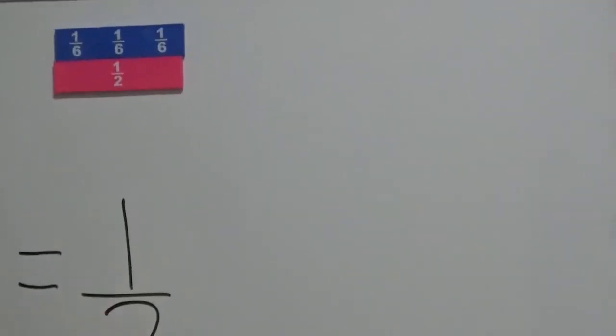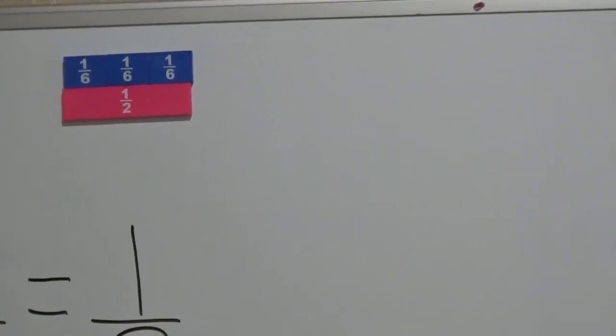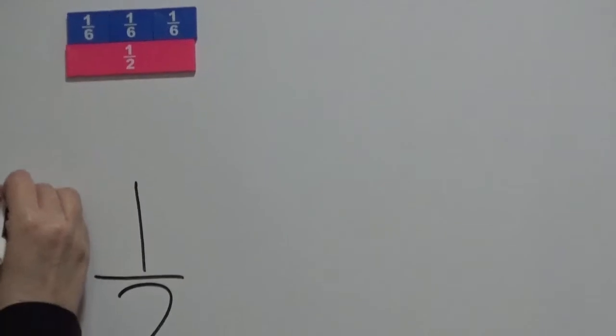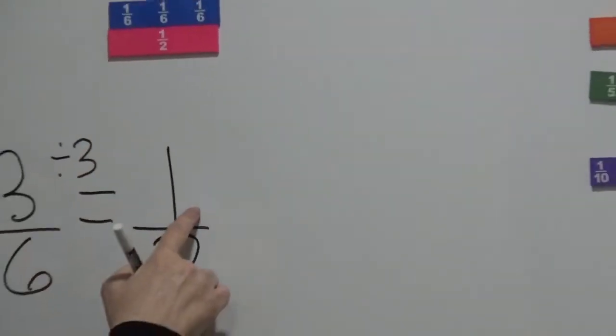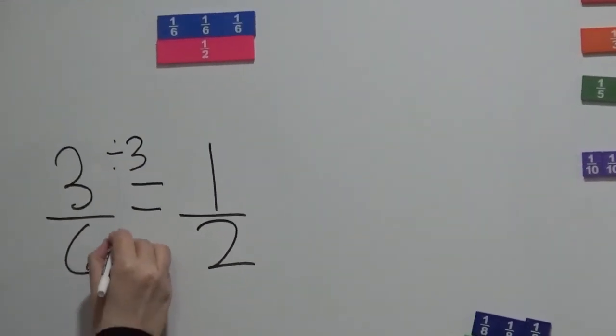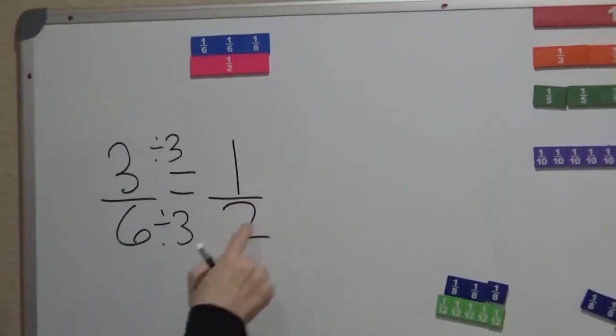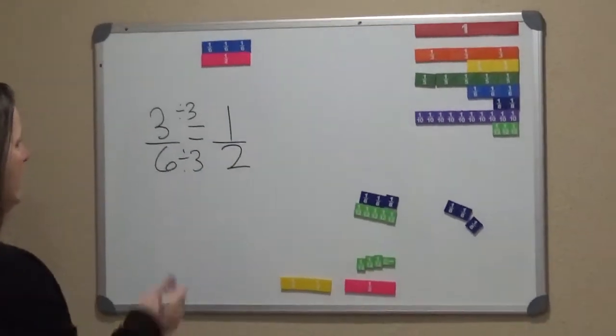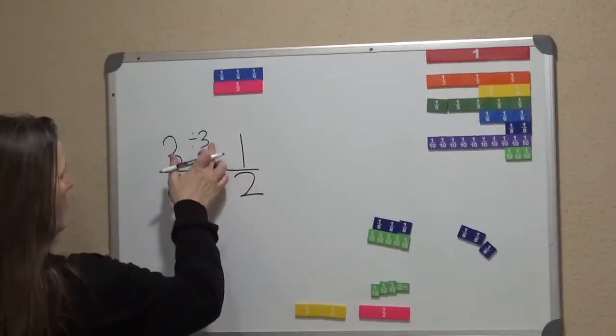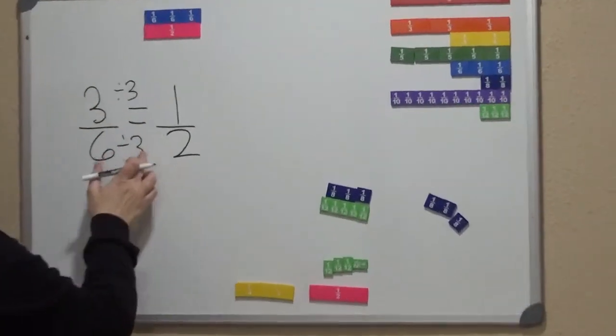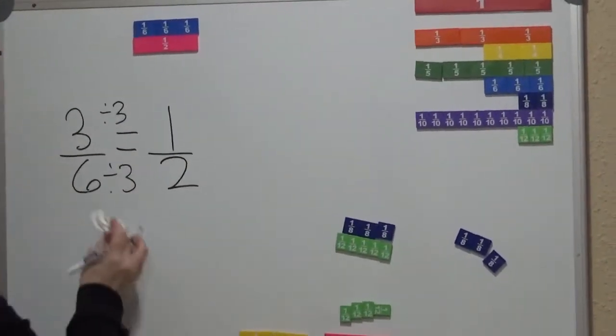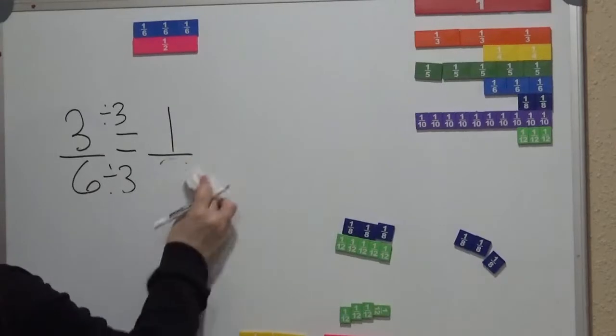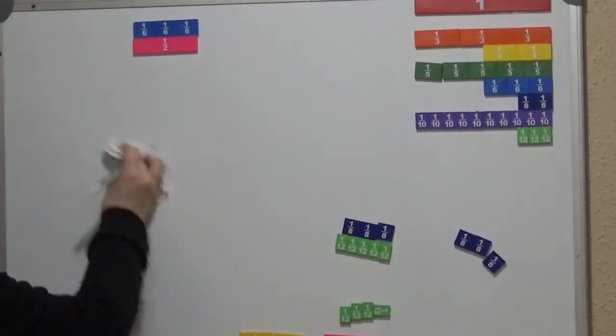So they're going to be equivalent. And if we wanted to check that, we can divide 3 by 3, and that gives us 1. And 6 divided by 3 gives us half. So therefore, we know we're correct. Or if we go this way, 1 times 3 is 3, and 2 times 3 is 6. So therefore, we know that they're equivalent, the same amount.